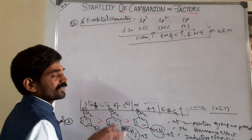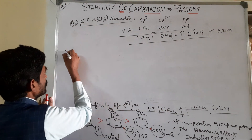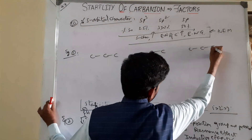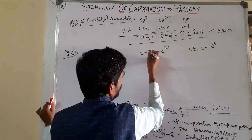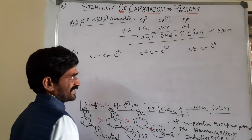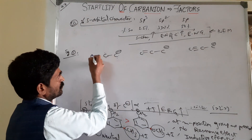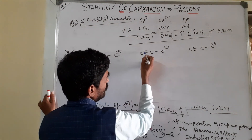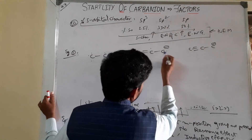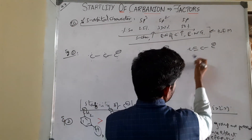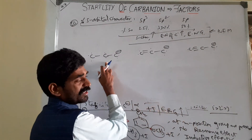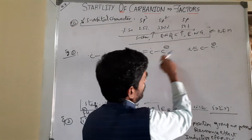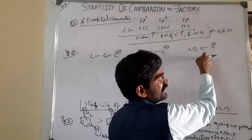Now with this concept, consider one example. Take three carbanions: one with a single bond (CH3-CH2-CH2 minus, propyl carbanion), one with a double bond (propenyl carbanion), and one with a triple bond (propynyl carbanion). The adjacent carbon in the propyl carbanion undergoes sp3 hybridization, the propenyl undergoes sp2, and the propynyl undergoes sp hybridization.